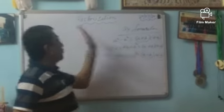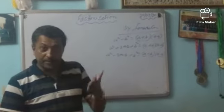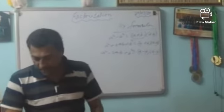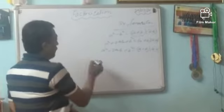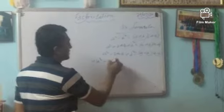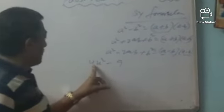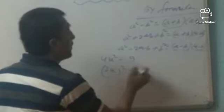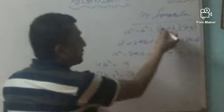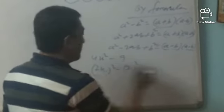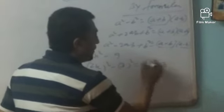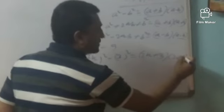For example: 4x² - 9. Here, 4 is the square of 2, so we can write it as (2x)², and 9 is 3². So this is in the form of a² - b². Applying the formula: (2x + 3)(2x - 3). These are the factors of 4x² - 9.